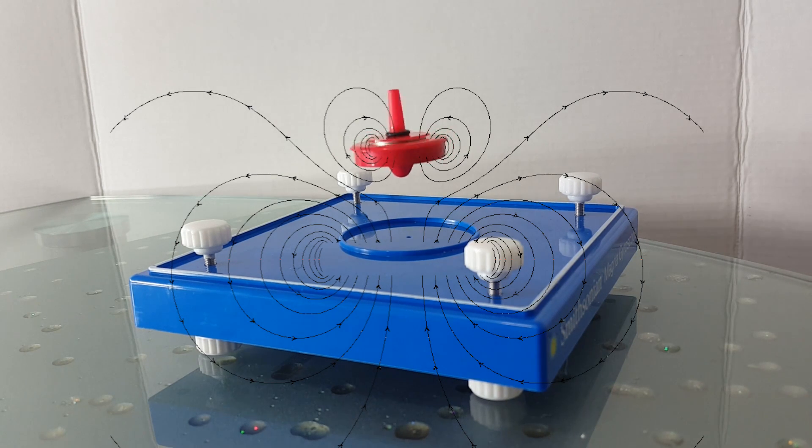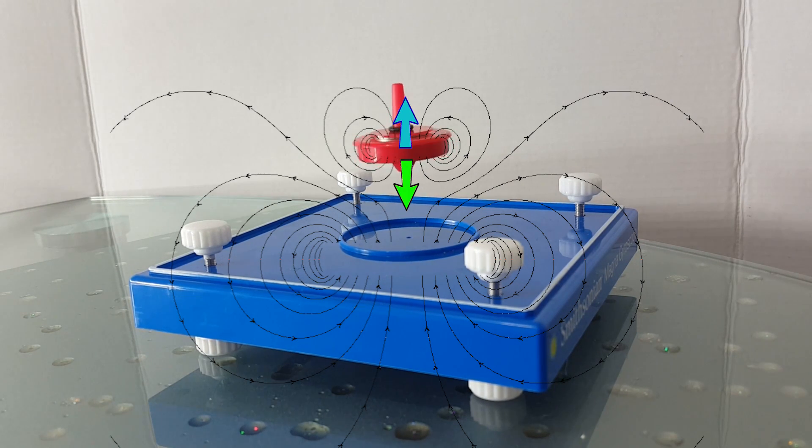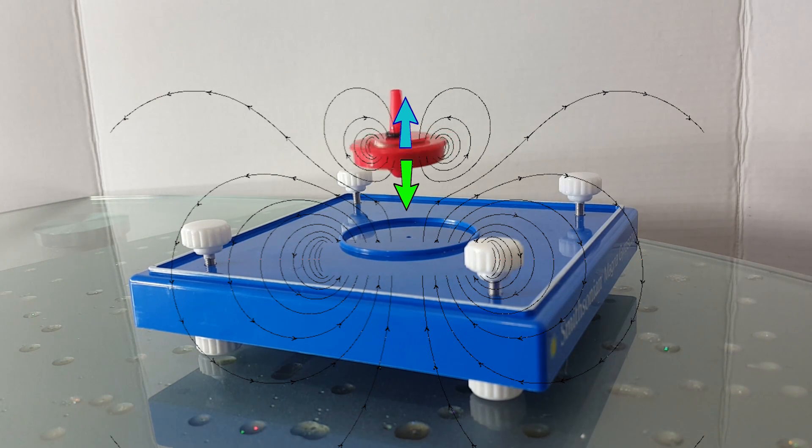The repelling magnetic force is pushing the spinner upwards. At the same time, the weight of the spinner is pulling it down. At this specific distance, these opposite forces are equal and cancel each other out.